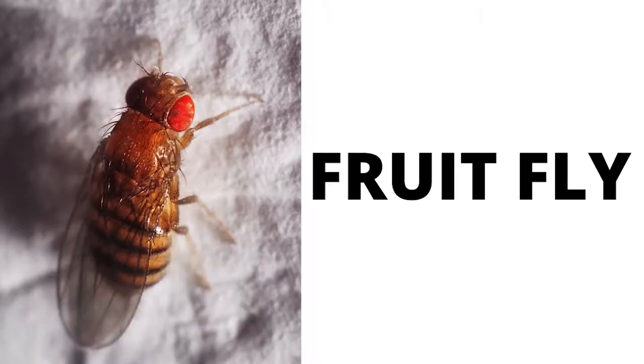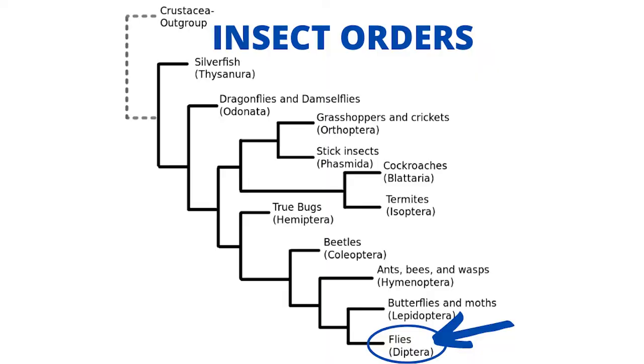Here's an example. This is a fruit fly. As you can see, there is a space between the words fruit and fly. A fruit fly is a true fly. The taxonomic group it belongs to is Diptera, which is an insect order that includes flies and mosquitoes.